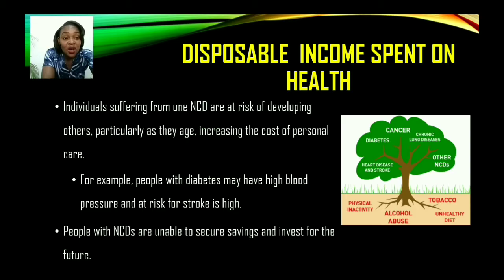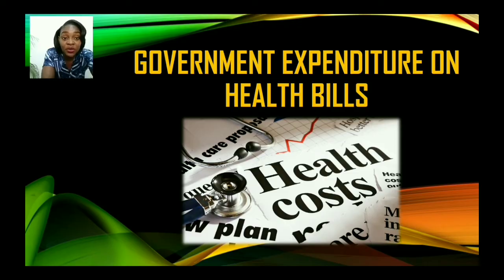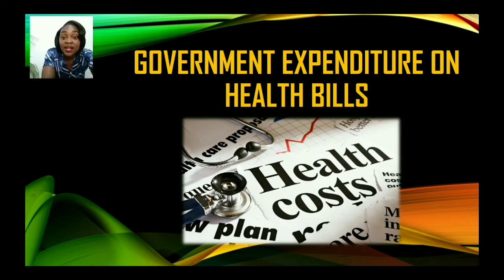Individuals suffering from one NCD are at risk of developing others, particularly as they age, increasing the cost of personal care. For example, people with diabetes may also have high blood pressure and be at high risk for stroke. People with NCDs are often unable to secure savings and invest for their future because all their disposable income goes into care, treatment, doctor visits, and dietary changes.